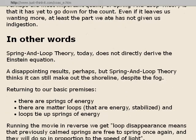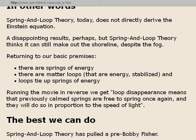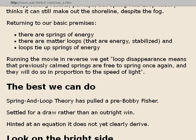In other words, spring and loop theory today does not directly derive the Einstein equation — a disappointing result, perhaps, but spring and loop theory thinks it can still make out the shoreline despite the fog. There are springs of energy, matter loops that are energy-stabilized, and loops that tie up springs of energy. Running the movie in reverse: loop disappearance means that previously calmed springs are free to spring once again, in proportion to the speed of light. Spring and loop theory has settled for a draw rather than an outright win — hinting at an equation it does not yet clearly derive.